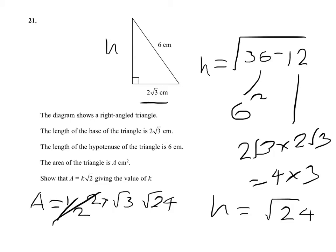So our 2s will cancel, and we've got root 3 times root 24. Now that will be the root of 3 times 24, which is the root of 72.